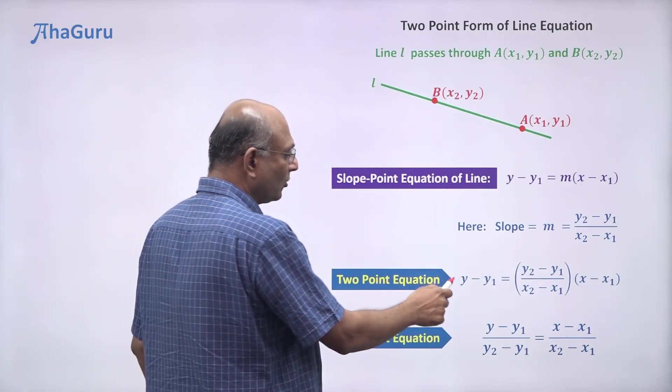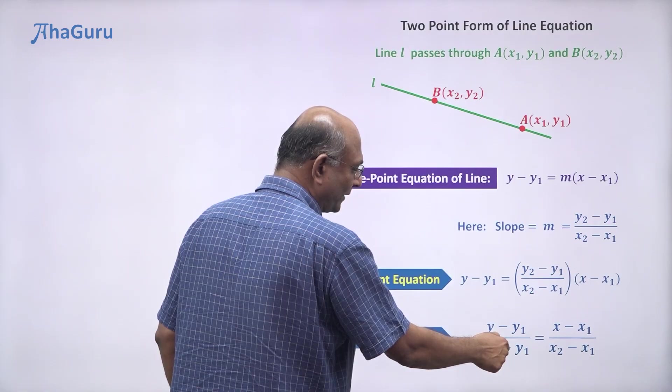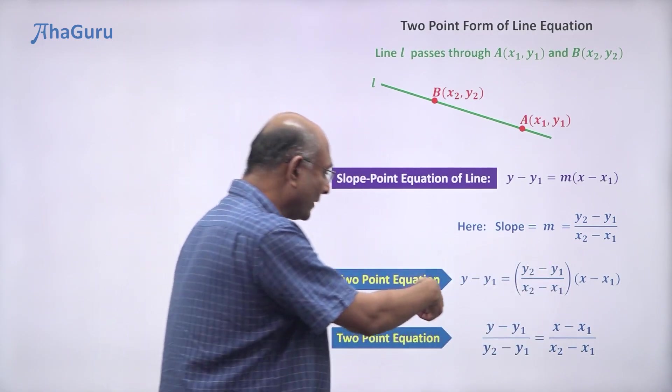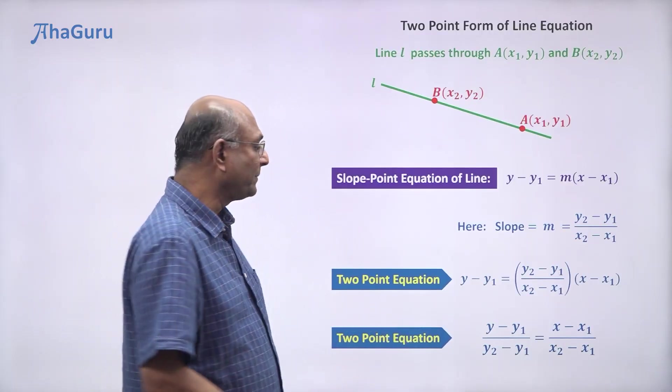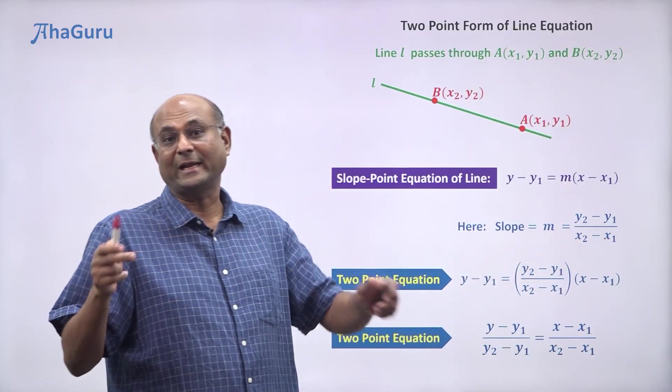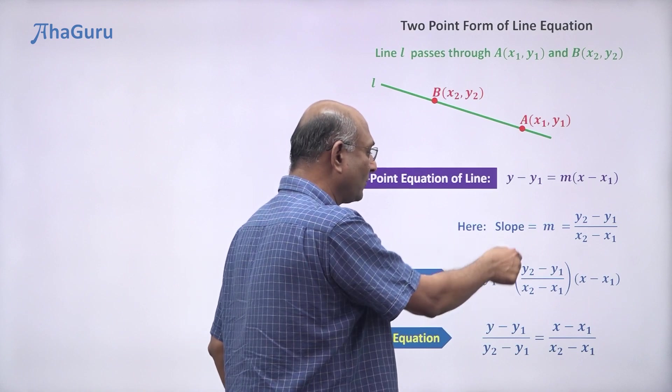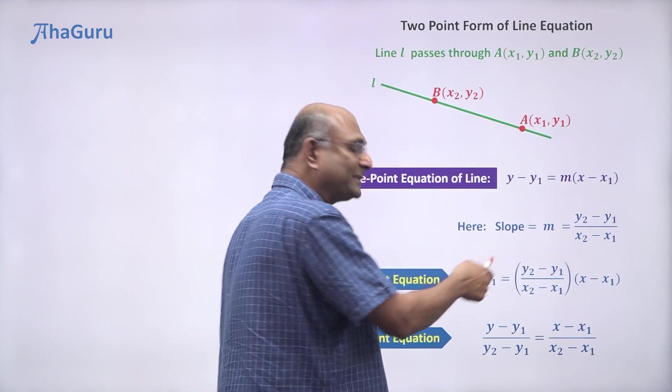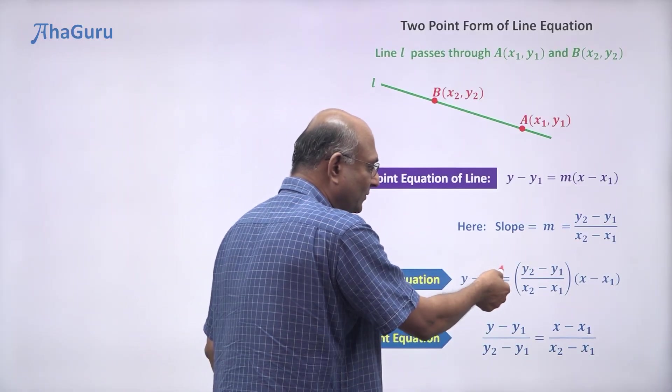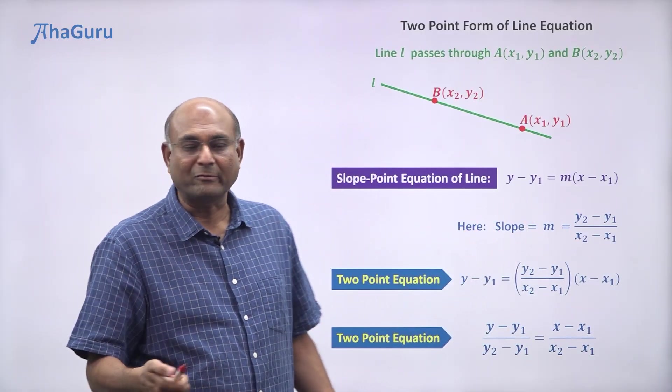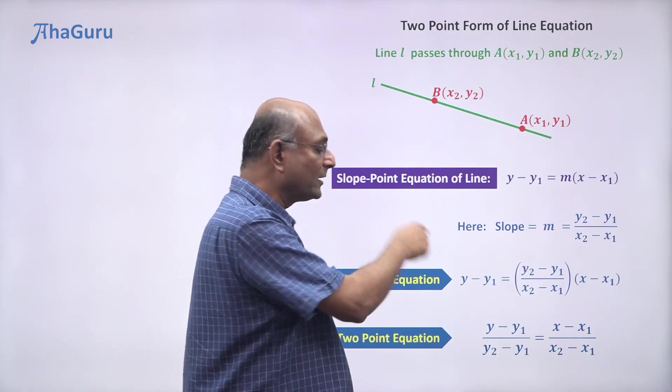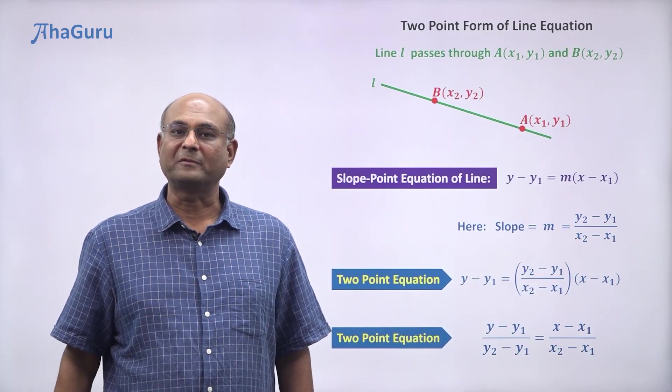Both of these are acceptable forms for writing the two-point equation of a straight line. I usually prefer this one because it looks exactly like the equation I know: y - y₁ = slope × (x - x₁), where slope is (y₂ - y₁)/(x₂ - x₁). So this makes it very simple, I don't have to remember anything at all. Let us now look at a couple of examples using the two-point form of the equation.